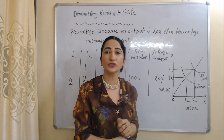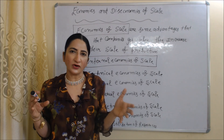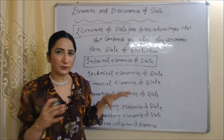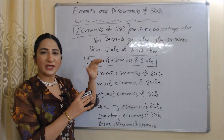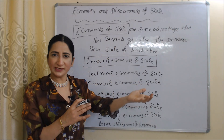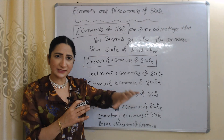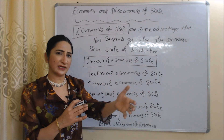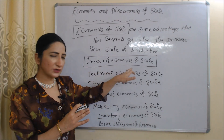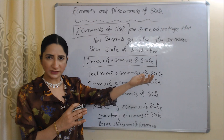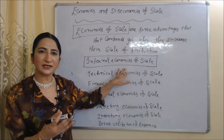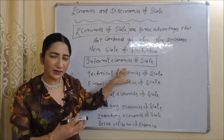Now we will see economies and diseconomies of scale. Economies of scale are some advantages that companies get when they increase their scale of production. Economies of scale are basically divided into two parts: internal economies of scale and external economies of scale. Internal economies of scale means when a company gets advantages from inside the company.